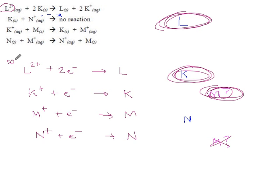Up here in the top left would be our strongest oxidizing agent. Weaker, weaker, weaker, weaker. N would be our weakest oxidizer.